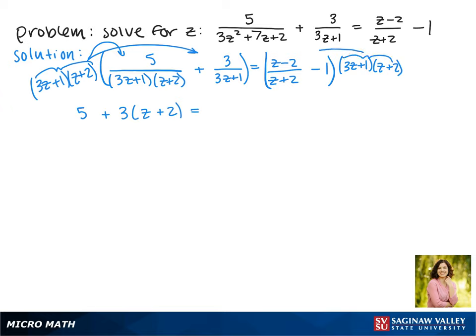On the right, we're going to multiply it by the first term and the z + 2 cancels, so we have these two binomials being multiplied. And then that 1 doesn't have anything to cancel, so we just have (3z + 1)(z + 2).